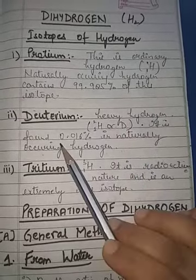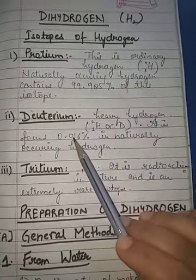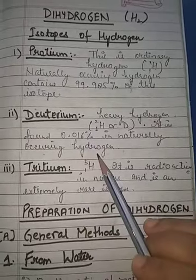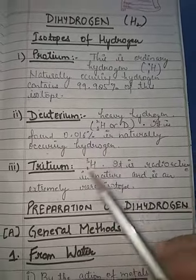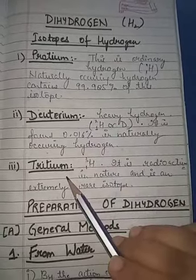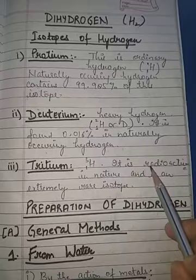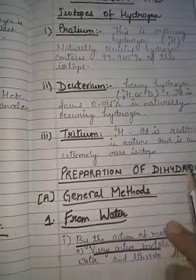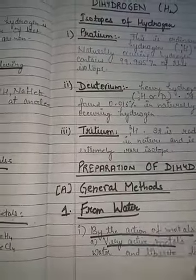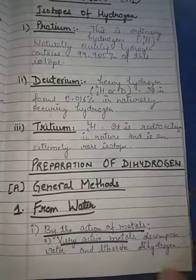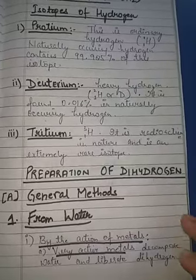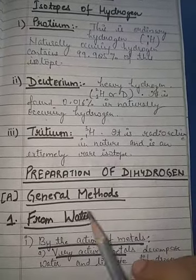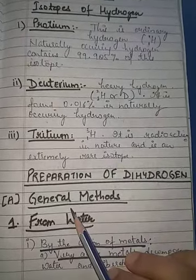Deuterium is found at 0.016% in naturally occurring hydrogen. Tritium is radioactive in nature and is an extremely rare isotope. Now we will study about the preparation of dihydrogen.